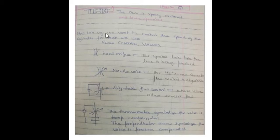Now let us see we want to control the speed of the cylinder. For that we have to use flow control valves. The first symbol is fixed orifice. The symbol looks like the line is being pinched. The second symbol is needle valve. The 45 degree arrow shows flow control is adjustable.